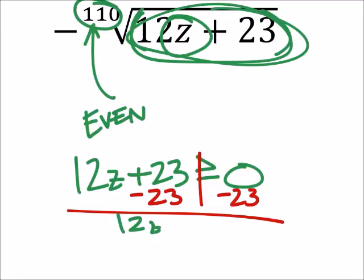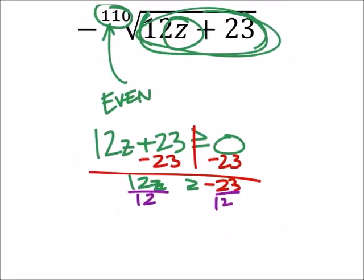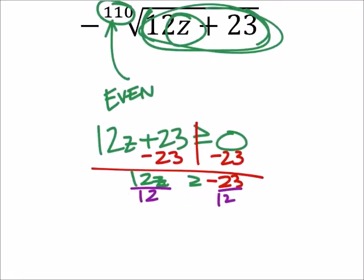And we got 12z is greater than or equal to negative 23. And then we'll divide both sides by 12, and we get z must be greater than or equal to negative 23 twelfths.